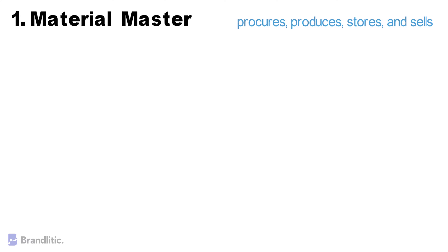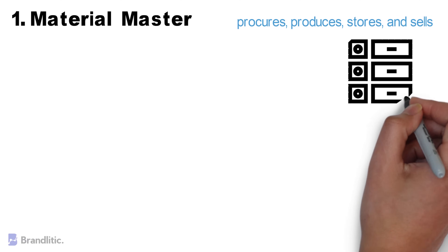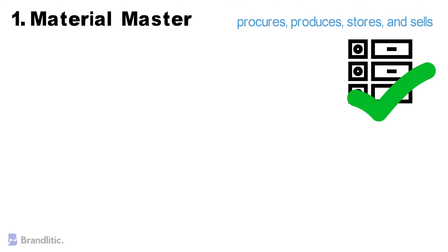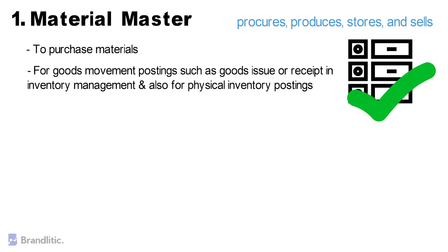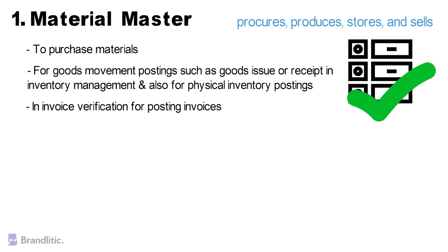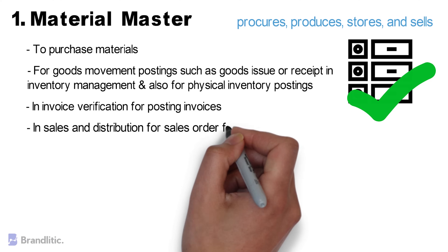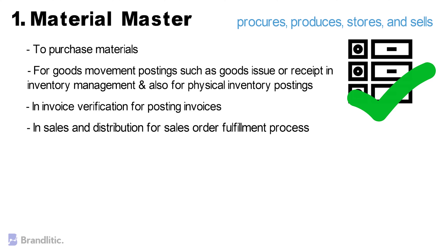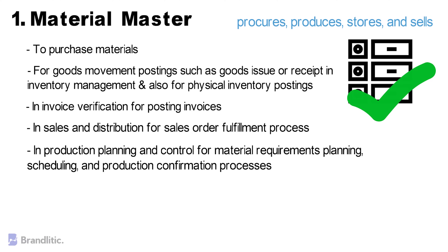The material master uniquely identifies a material master record, and hence also a material. Materials with the same basic attributes are grouped together and assigned to a material type such as finished goods, raw material, etc. It is used in the following processes: 1. To purchase materials. 2. For goods movement postings such as goods issue or receipt in inventory management and for physical inventory postings. 3. In invoice verification for posting invoices. 4. In sales and distribution for sales order fulfillment. 5. In production planning and control for material requirements planning, scheduling, and production confirmation processes.